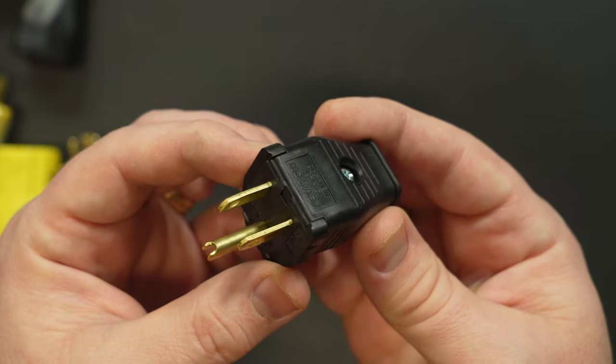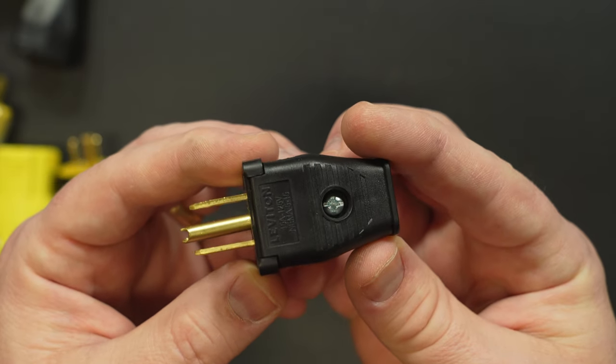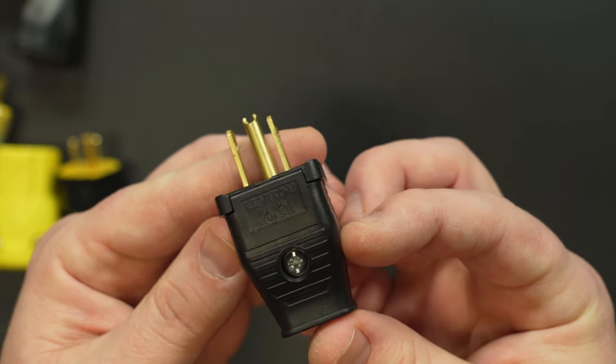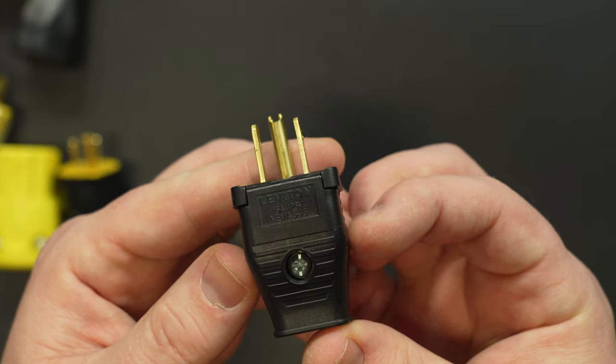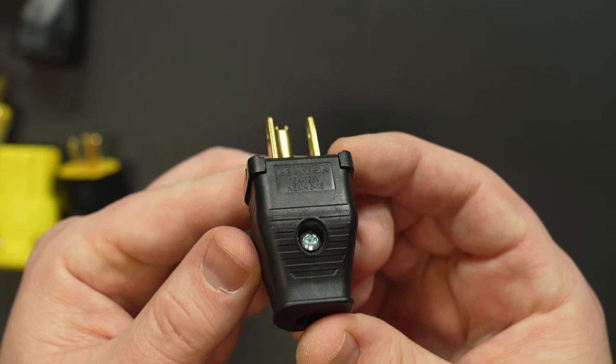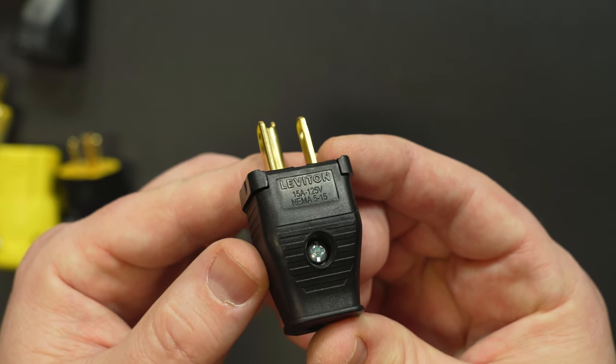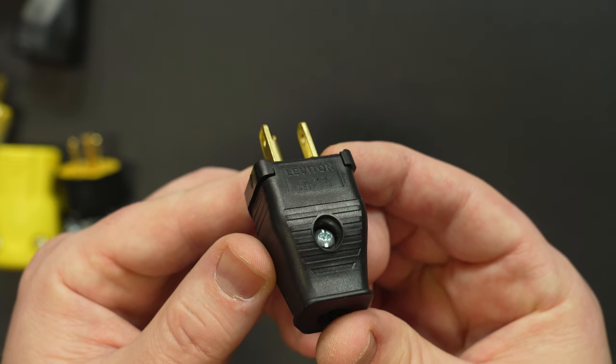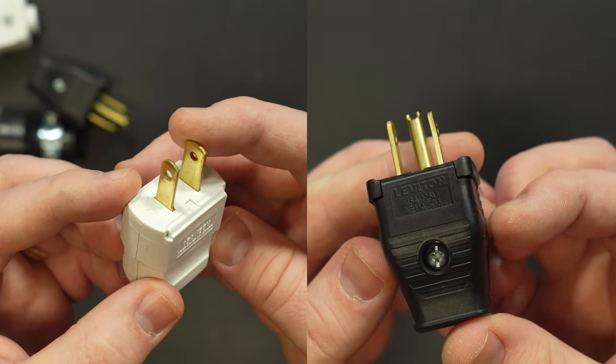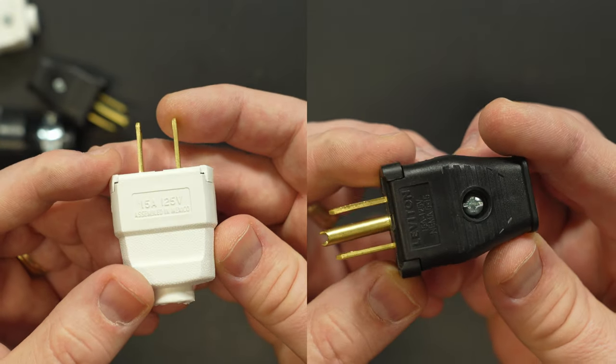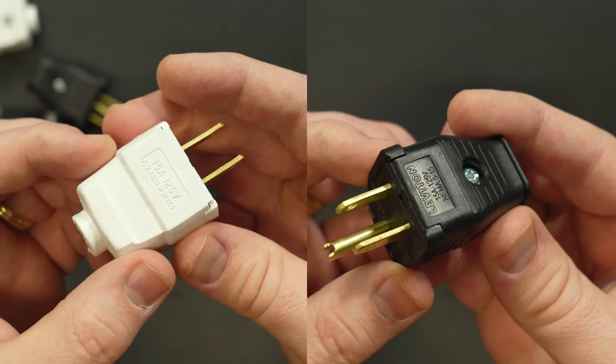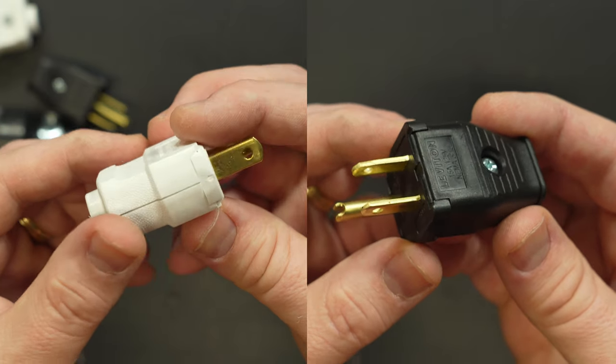The other uses three prongs and is called the NEMA 5-15. This connector uses the hot, the neutral, and the ground wires and this is the most common type of end on an extension cord. In this video I'll demonstrate how to replace both the NEMA 1-15 or the two prong and the NEMA 5-15 or the three prong plugs which again are the most common types you'll encounter in most of North America.